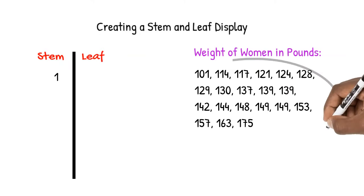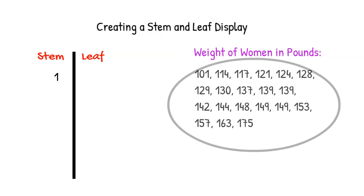However, since all the values start with 1, that would make for a very uninteresting display. All numbers would fall in the same category. Instead, let's use the first two digits as our stems.